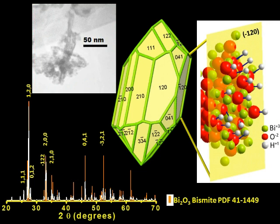The needle-shaped morphology of bismuth oxide nanoparticles was determined by transmission electron microscopy. The monoclinic phase was identified using powder X-ray diffraction. The estimated crystal size of 77 nanometers was determined using the Scherrer equation. From the X-ray diffraction pattern and the TEM images, we observed that the needle-shaped crystals are textured material in the 1-2-0 direction.